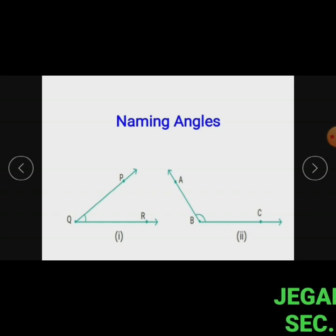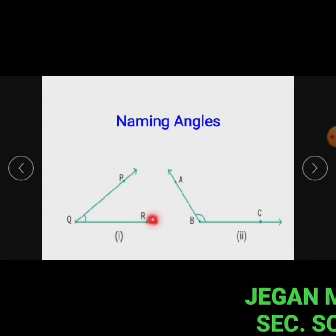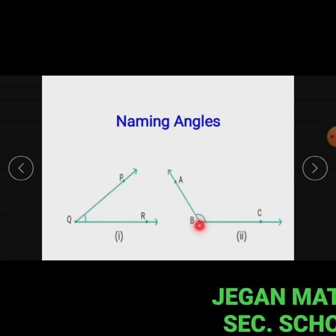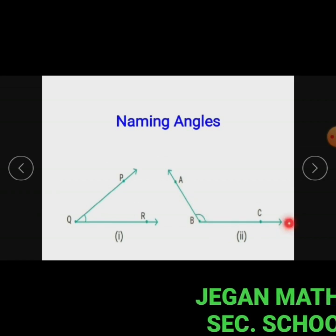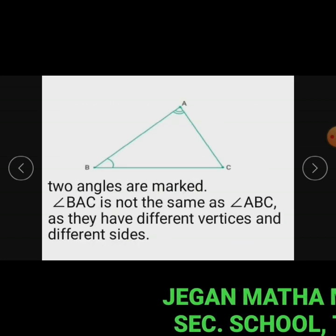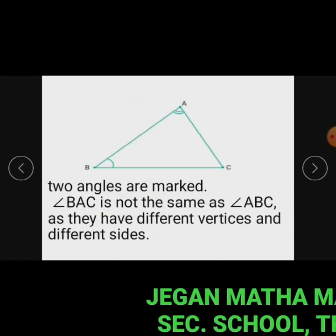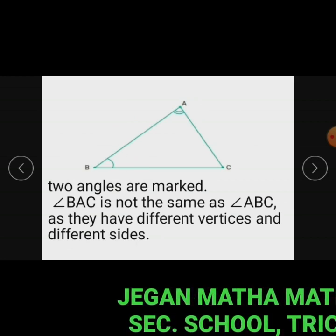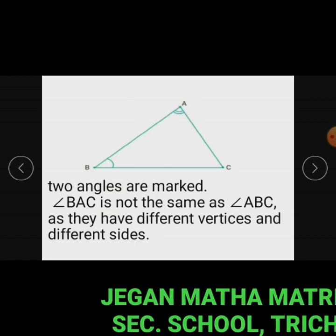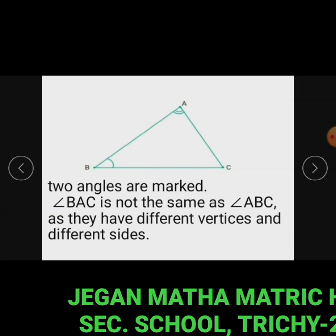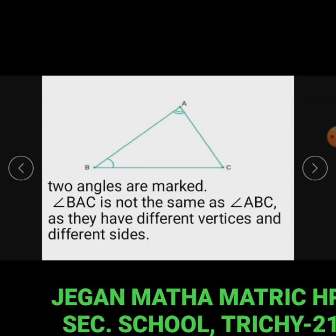We name the angle Q in figure one as angle PQR or angle RQP. Similarly in figure two, angle B may be written as angle ABC or angle CBA. Note that angle BAC is not the same as angle ABC, as they have different vertices and different sides.